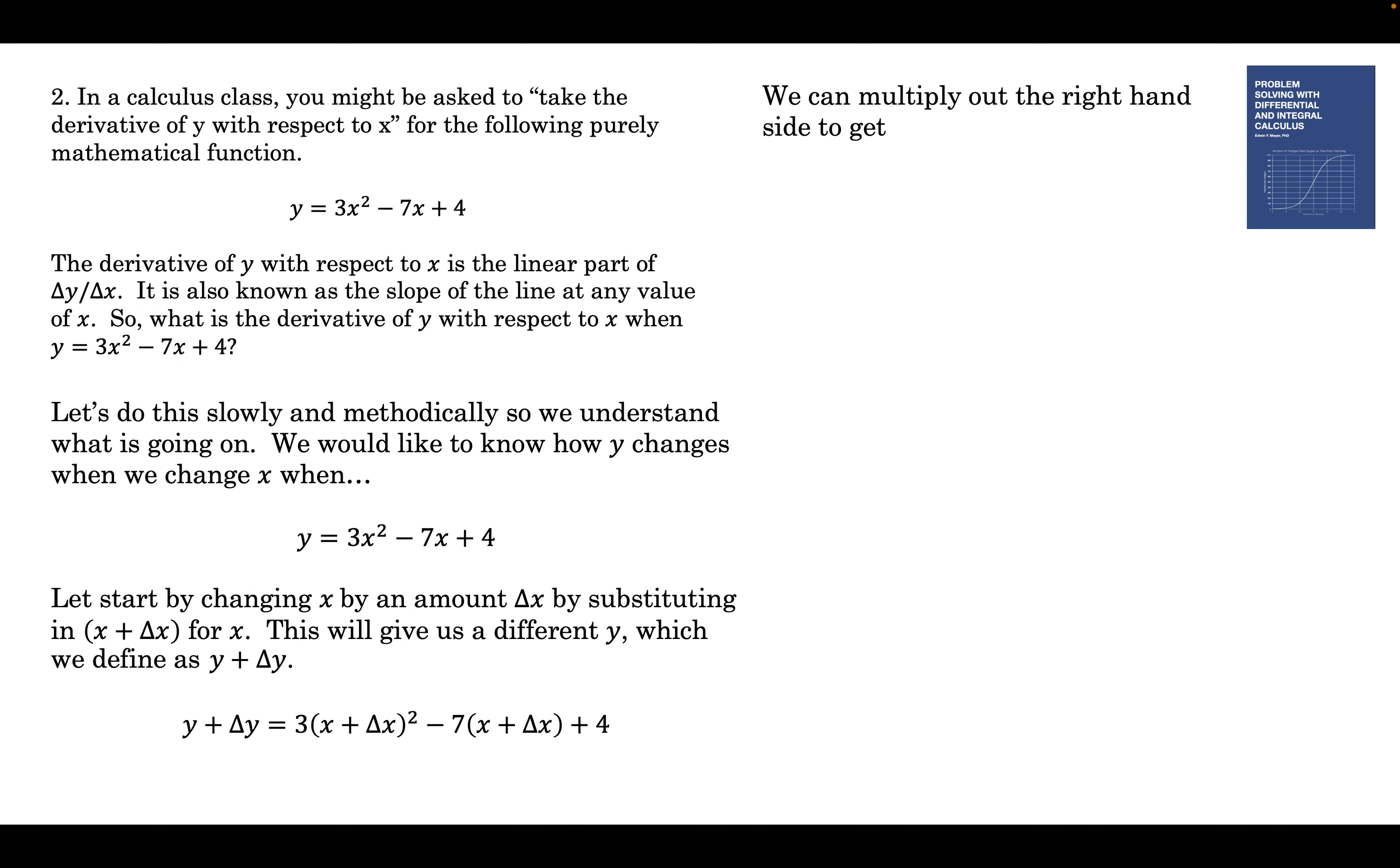And now we can solve. We can get Δy over Δx. So multiplying out that right-hand side, we foiled this right here. Put the 7, distributed the 7 in there. And we got this. This is just the right-hand side. Now we can subtract y. We know what y is. It's 3x² minus 7x plus 4. So here's y: 3x² minus 7x plus 4.